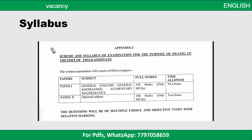Now let's have a look at the syllabus. There are going to be two papers — Paper 1 and Paper 2. In Paper 1, you have General English up to Class 10 level, General Knowledge including current affairs, and Elementary Mathematics also up to Class 10 level.